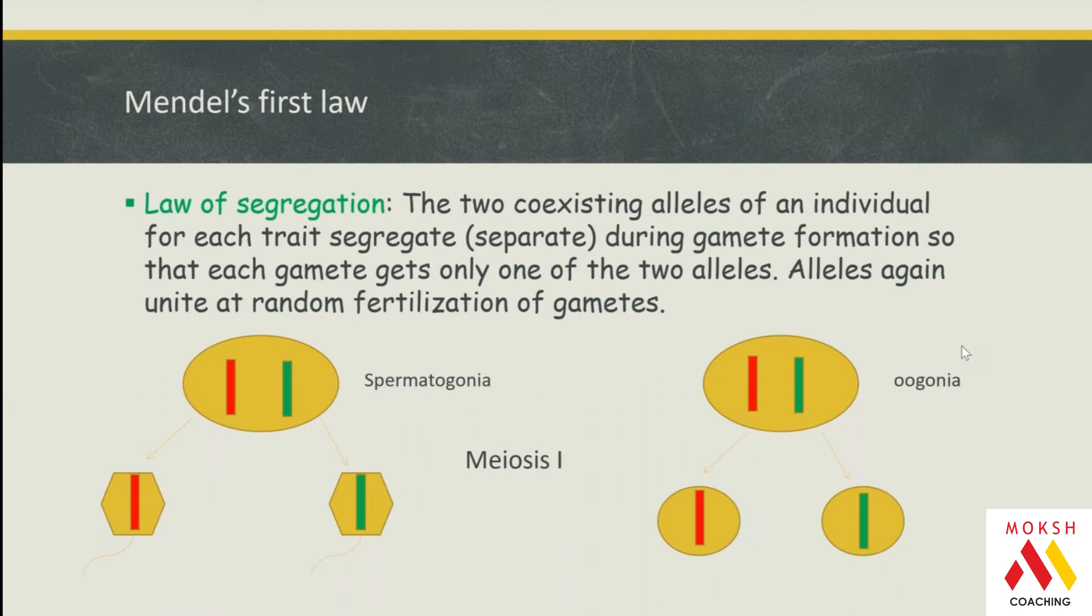Mendel was really lucky. Pea plants were obeying single-gene inheritance patterns. Later on, we appreciated that many genes don't obey Mendel's laws. We have something called atypical inheritance, multifactorial inheritance, etc. When he did it, he thought that all genes behave the same way, which is not the case.